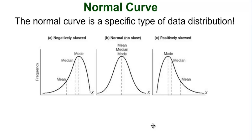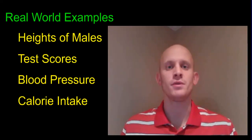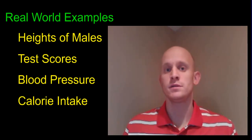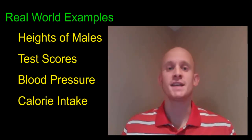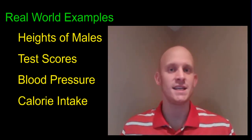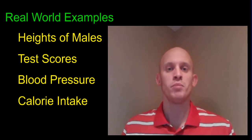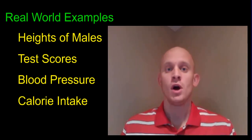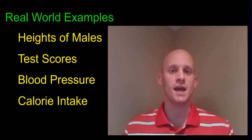So when we look at a distribution, we first need to decide whether it is a normal distribution or not. In fact, many things in the real world follow a normal distribution. Some real-world examples include the heights of males, test scores on the ACT or the SAT, blood pressure for adults, or even calorie intake.